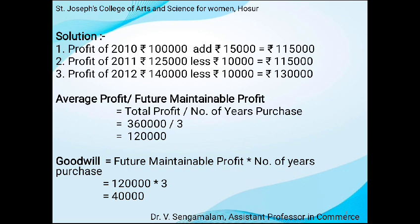Let us see the solutions. In the year 2010, goods destroyed by fire is an unexpected loss, so we want to add Rs. 15,000 back to the net profit. In the year 2011, non-recurring income of Rs. 10,000 we want to deduct from the net profit. In the year 2012, income from investment of Rs. 10,000 we also want to deduct from the net profit. Then we can get the future maintainable profit. Average Profit = Future Maintainable Profit ÷ Number of Years. Goodwill = Future Maintainable Profit × Number of Years Purchase.